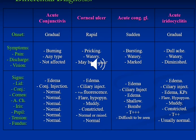Uveitis is one of the red eye syndromes, and it should be clearly differentiated from other causes, including acute conjunctivitis, corneal ulcer or keratitis, and acute congestive glaucoma.